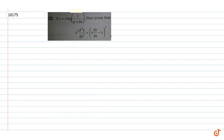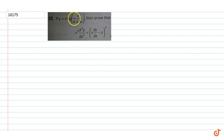In this question, if y is equal to x log(x plus a) plus bx, then prove that x cube into d square y by dx square is equal to x into dy by dx minus y, the whole square.